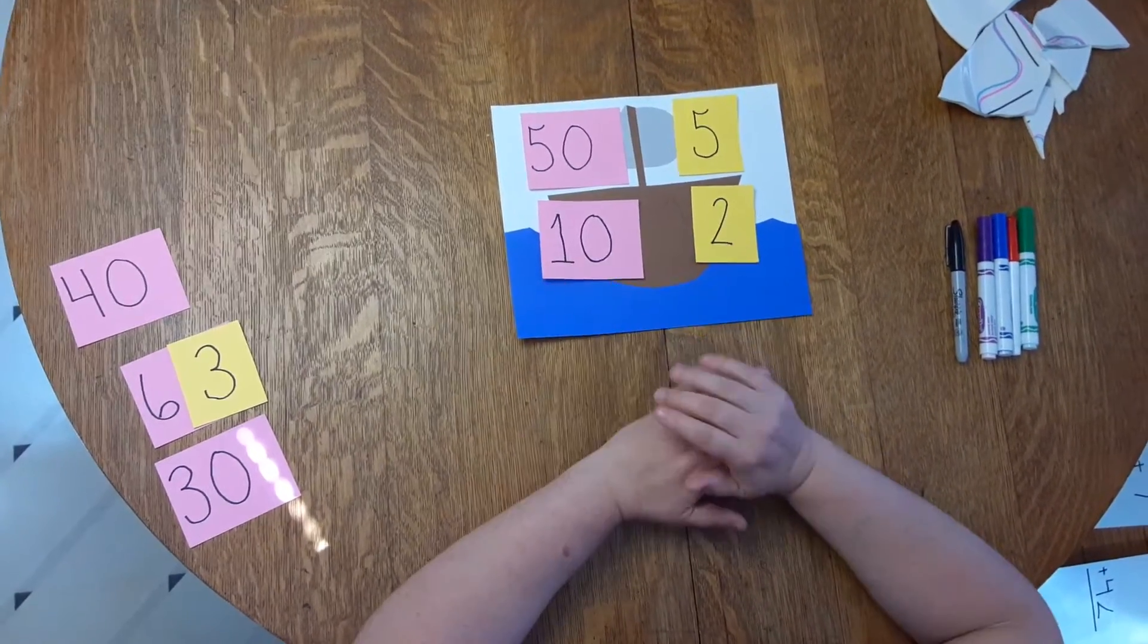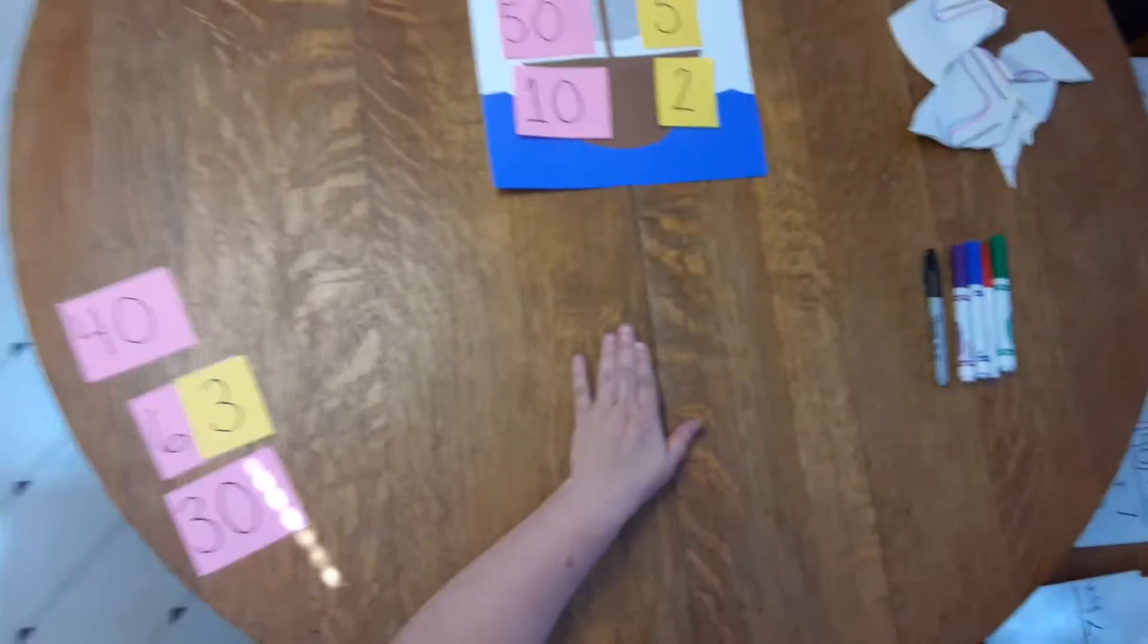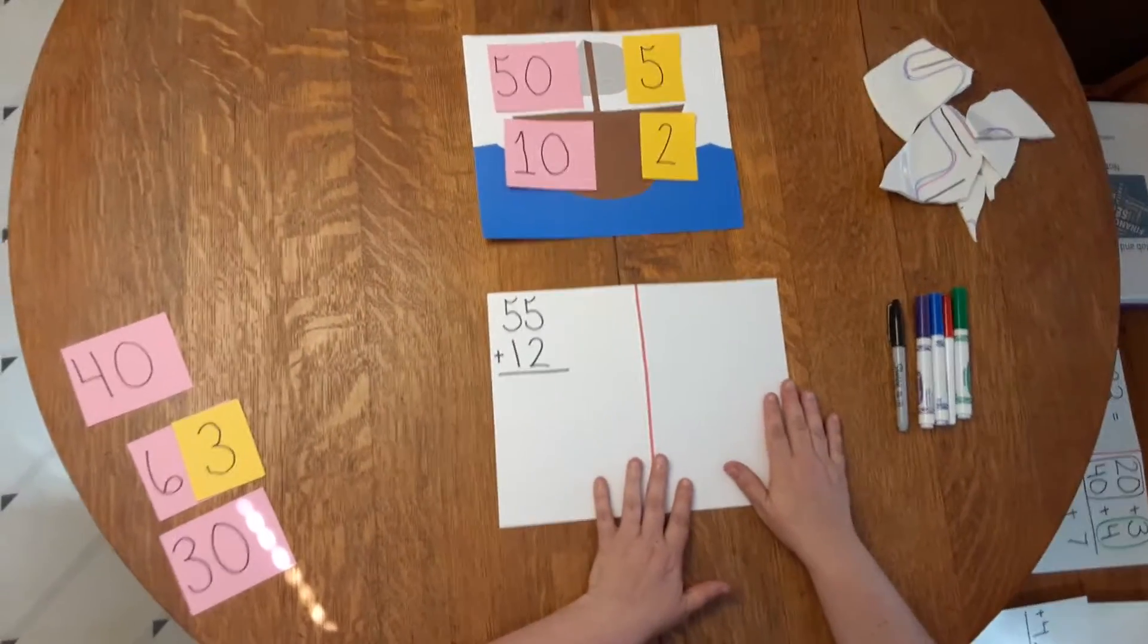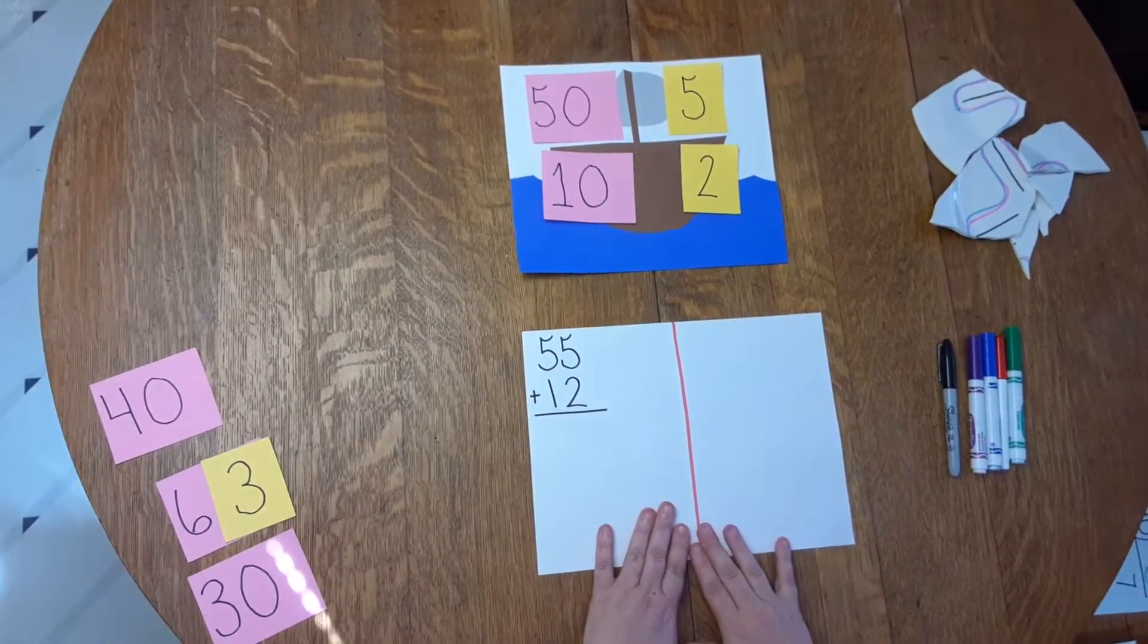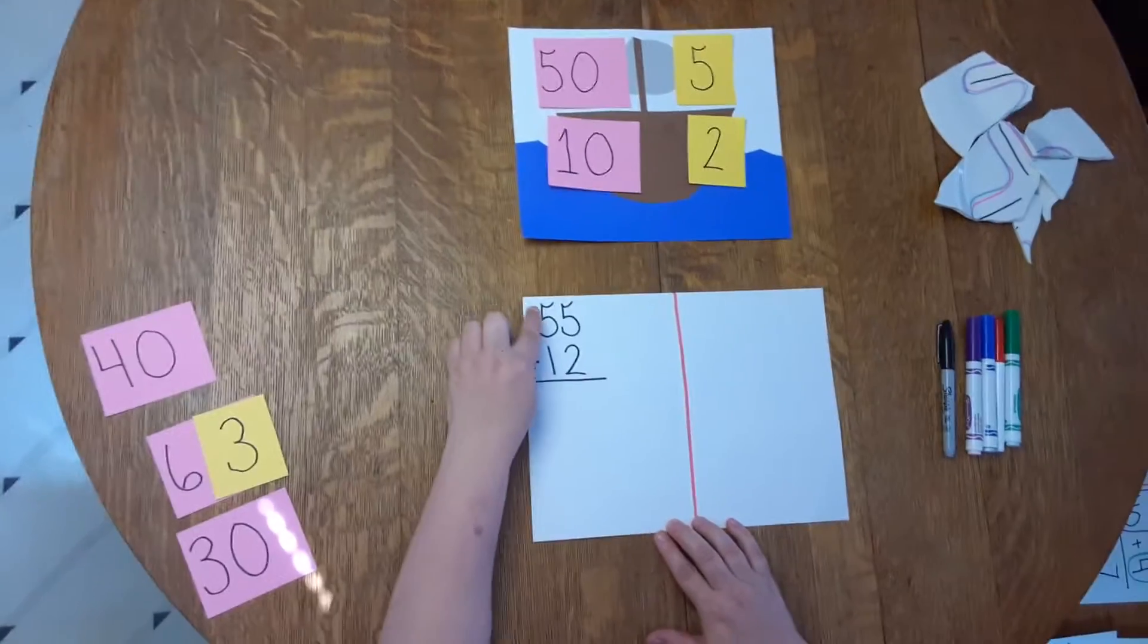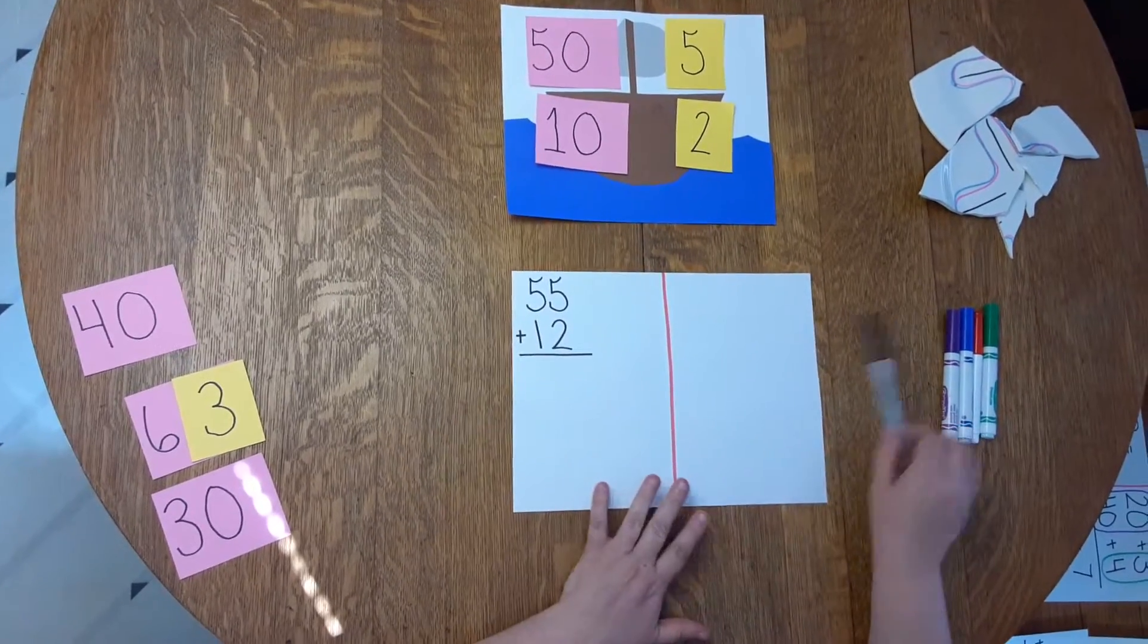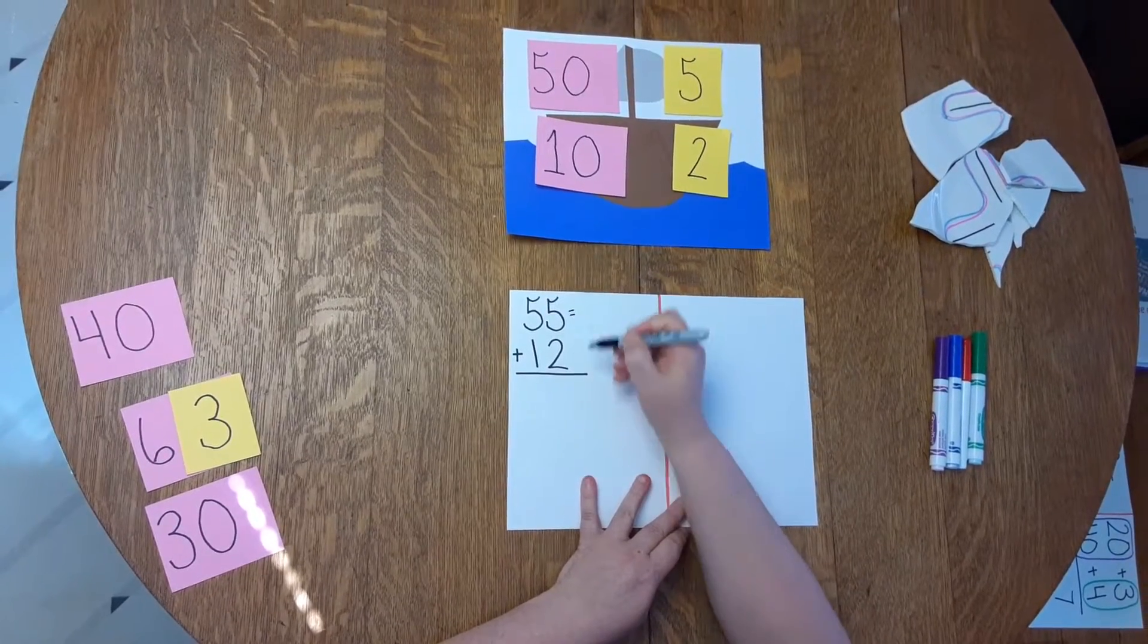And I need to add those numbers together. So what I do is I take a piece of paper that looks like this, and I folded it in half, and I drew a line. Here is my problem. I always write it vertically, the bigger number on top.